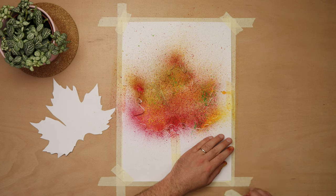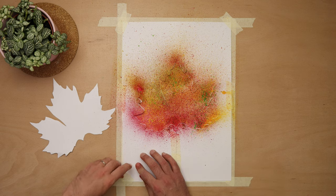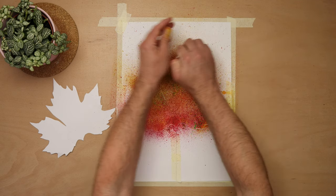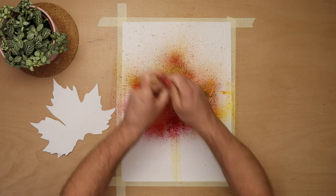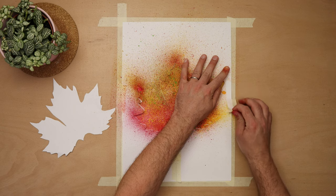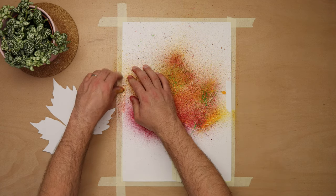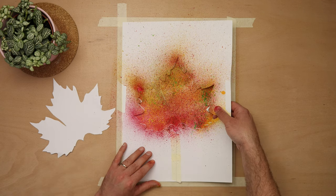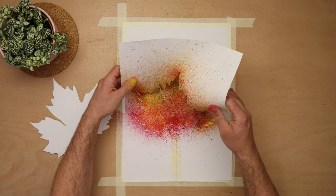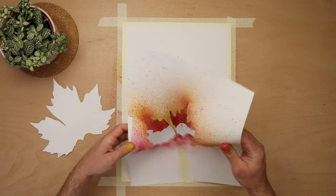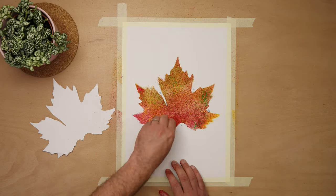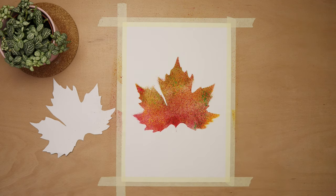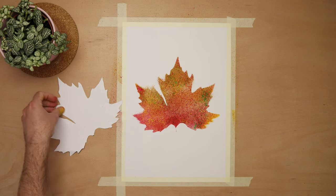Gently peel the stencil away. Now this looks brilliant so if you want to keep it to just this then great but I want mine to pop a little bit more so I'm going to cover the leaf with the positive stencil using a bit of Blu Tack to hold it down.